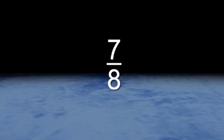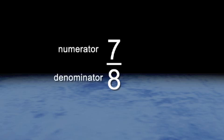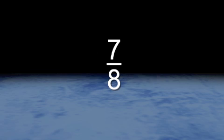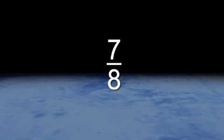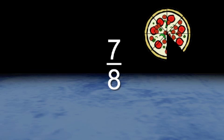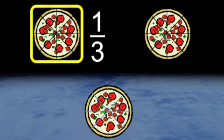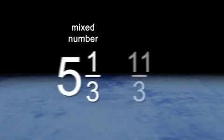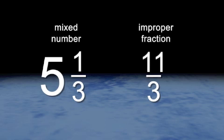Let's review. This is a fraction — there's the numerator, there's the denominator. This one tells you how many you have, and this one tells you how many you need to make one complete object. A fraction can be a piece of an object, or it can be a section of a group. This is a mixed number, and this is an improper fraction.